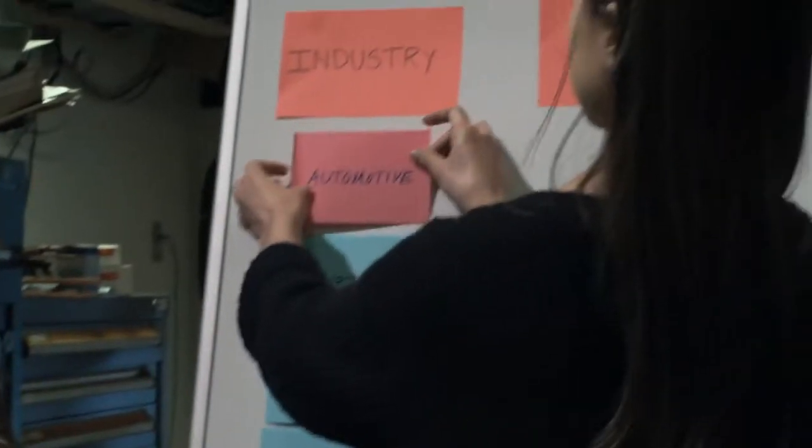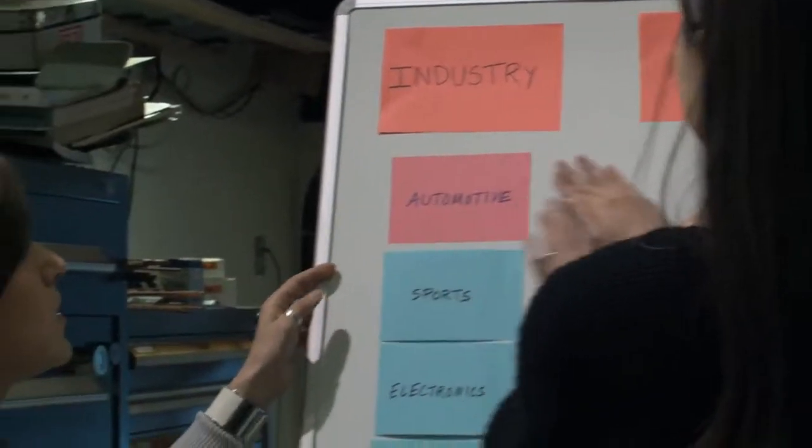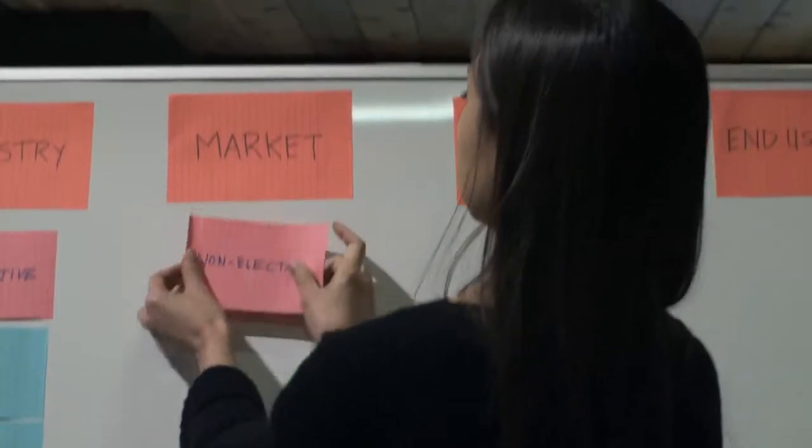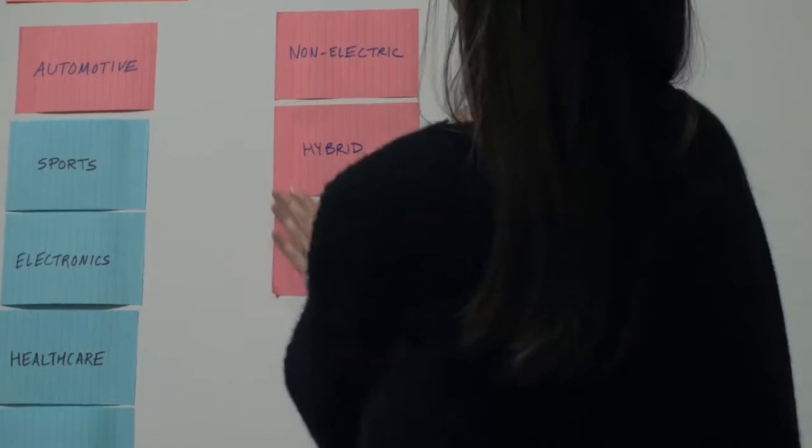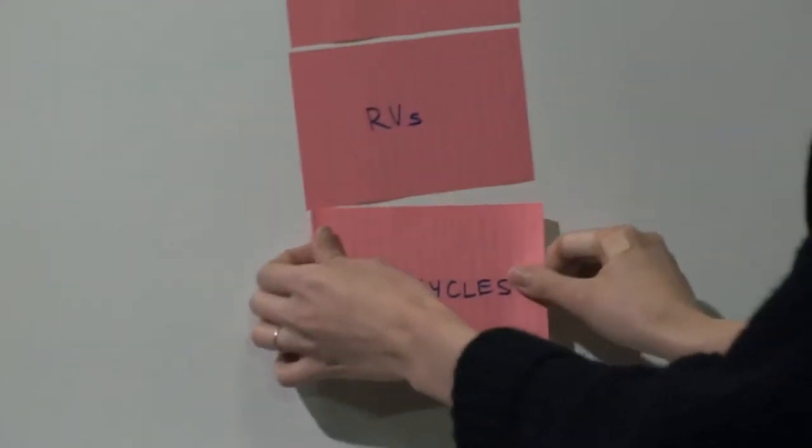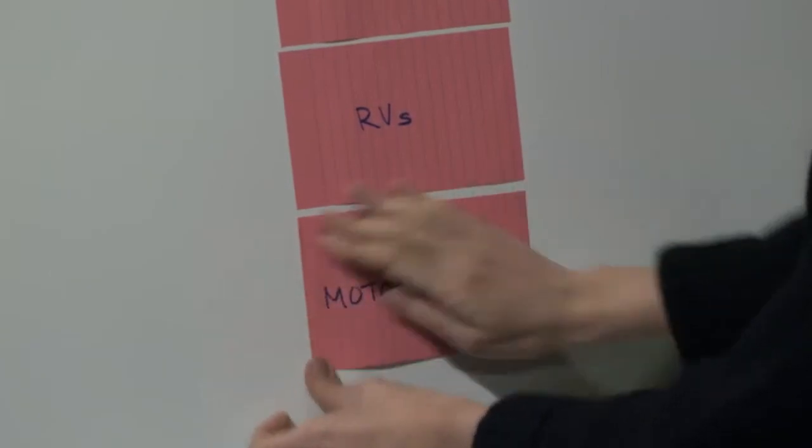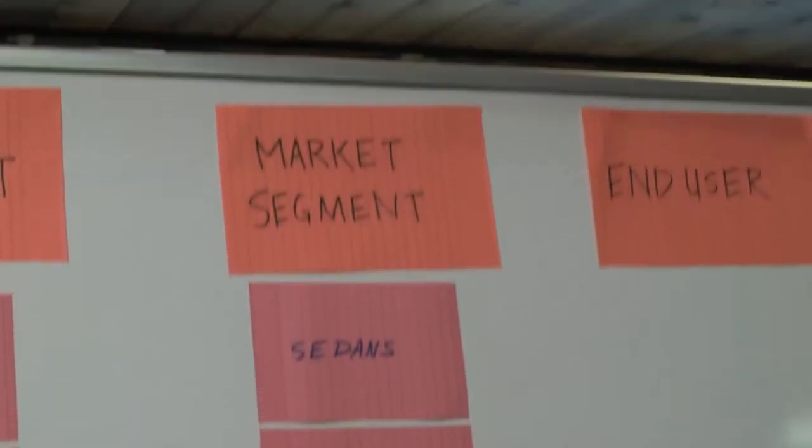Let's take the automotive industry as an example. This industry could be broken down into three key markets: the market for non-electric vehicles, hybrids, and electric vehicles. And each of these markets contains market segments such as sedans, sports cars, SUVs, trucks, RVs, and motorcycles.